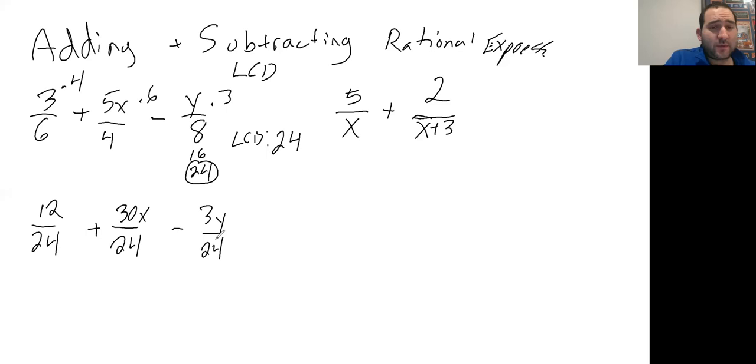Once you get to this with a common denominator, you simplify the numerator - simplify the top, combine any like terms. Between 12, 30x, and 3y, do you have any like terms? No. So you can either leave it like that, which is fine, or write it all over one denominator, over 24, and make it 12 + 30x - 3y.